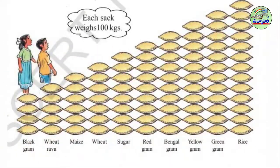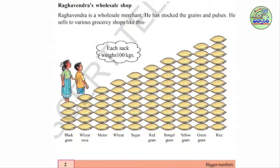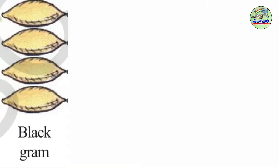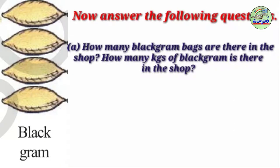Raghavendra is a wholesale merchant. He has stocked grains and pulses, and he sells to various grocery shops like this. Each sack weighs 100 kgs. Children, look at this picture carefully. For example, I will take black gram. How many black gram bags are there in the shop? How many kgs of black gram is there in the shop?